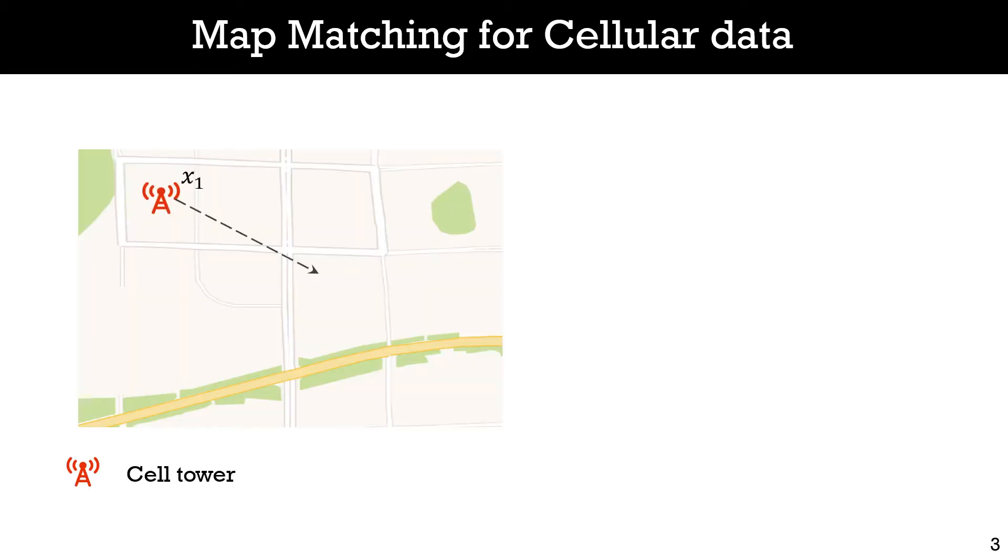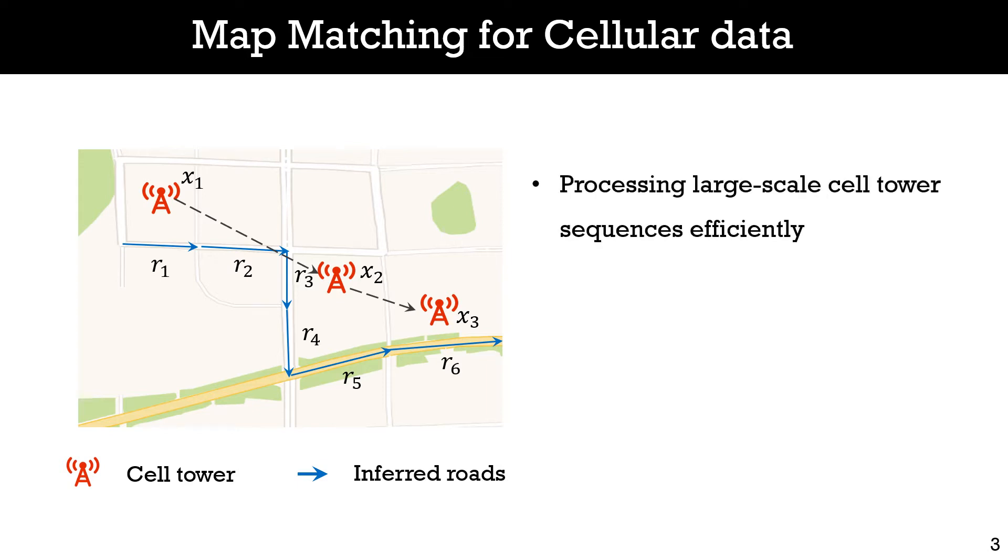For example, suppose a user connects to three cell towers at different times. The map matching algorithm aims to find the most likely roads traversed by the users. In real-world applications, map matching algorithms are also necessary to run fast. For example, for applications that involve analysis of large-scale users, faster inference can provide timely results for further analysis. This can minimize computation resource consumption, such as power, storage, and computations.